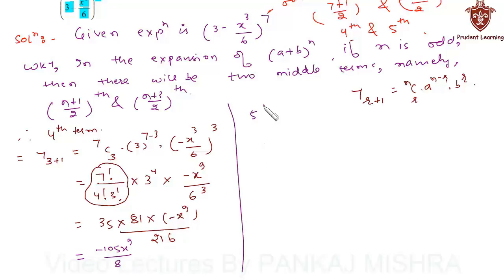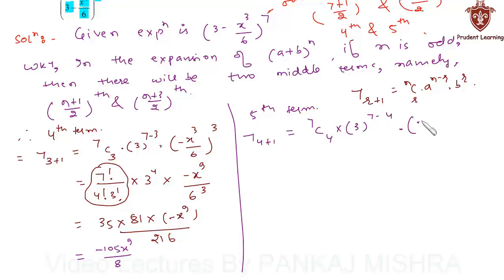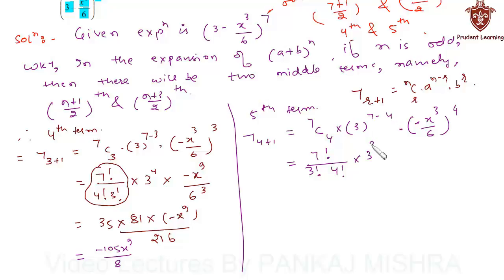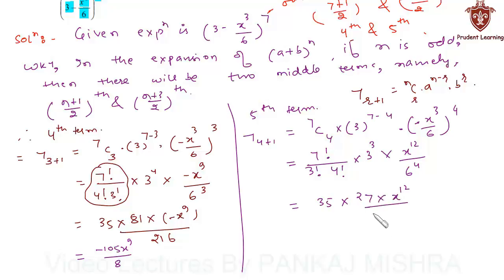For the 5th term, we write T(4+1), which equals 7C4 into 3 raise to (7 minus 4) into (minus x cube upon 6) raise to 4. This equals 7 factorial upon (3 factorial into 4 factorial) into 3 raise to 3 into x raise to 12 upon 6 raise to 4, which can be written as 35 into 27 into x raise to 12 upon 1296.